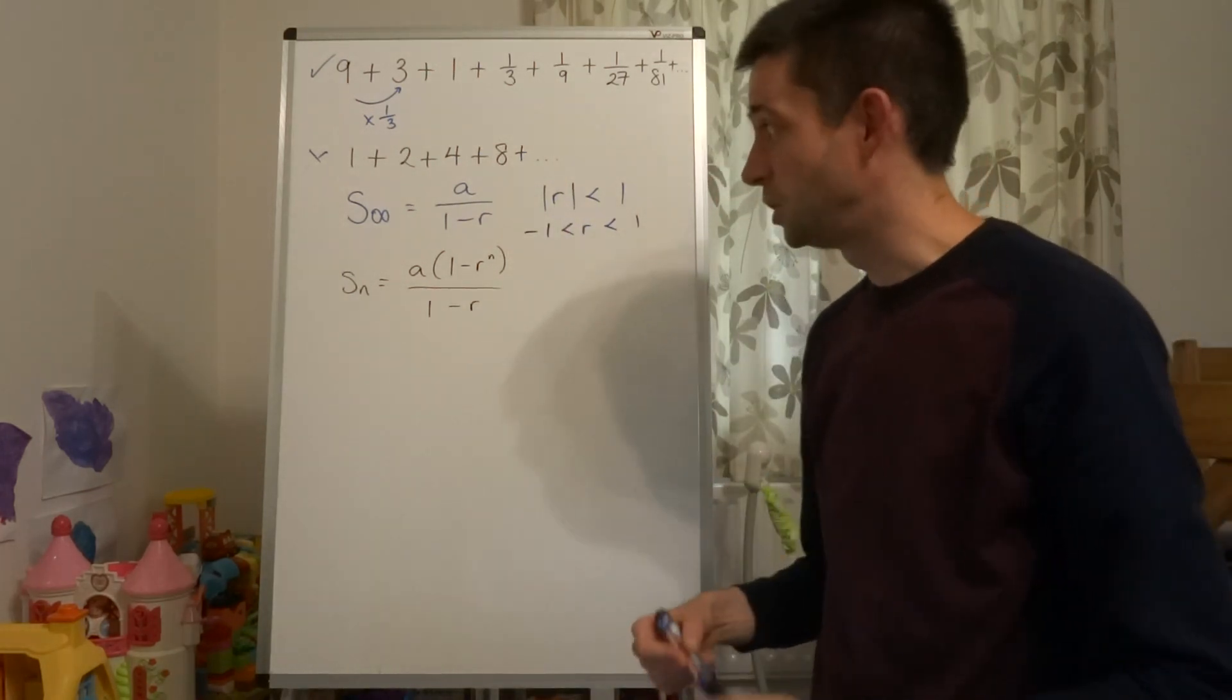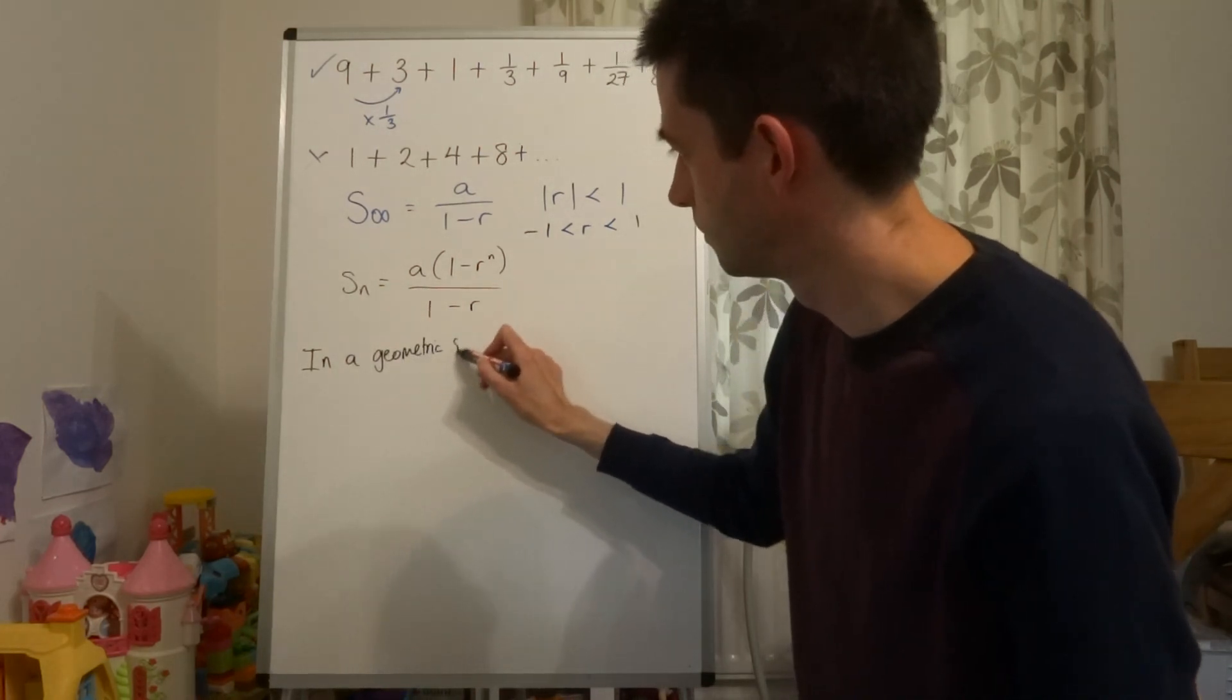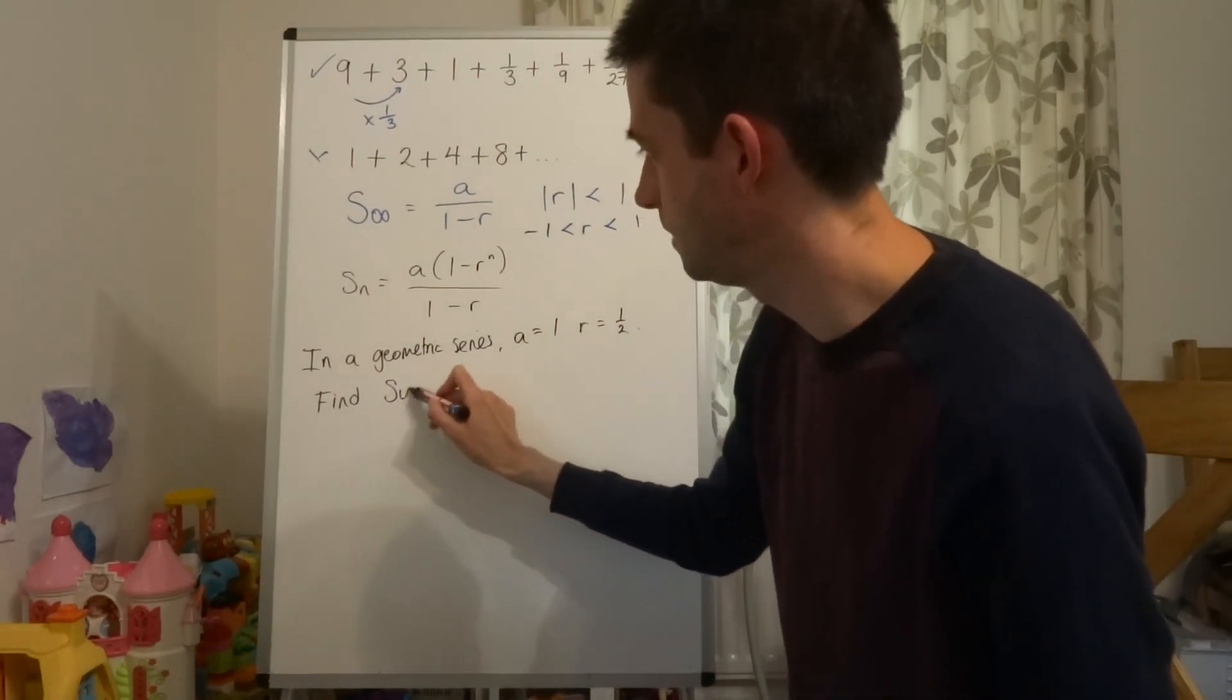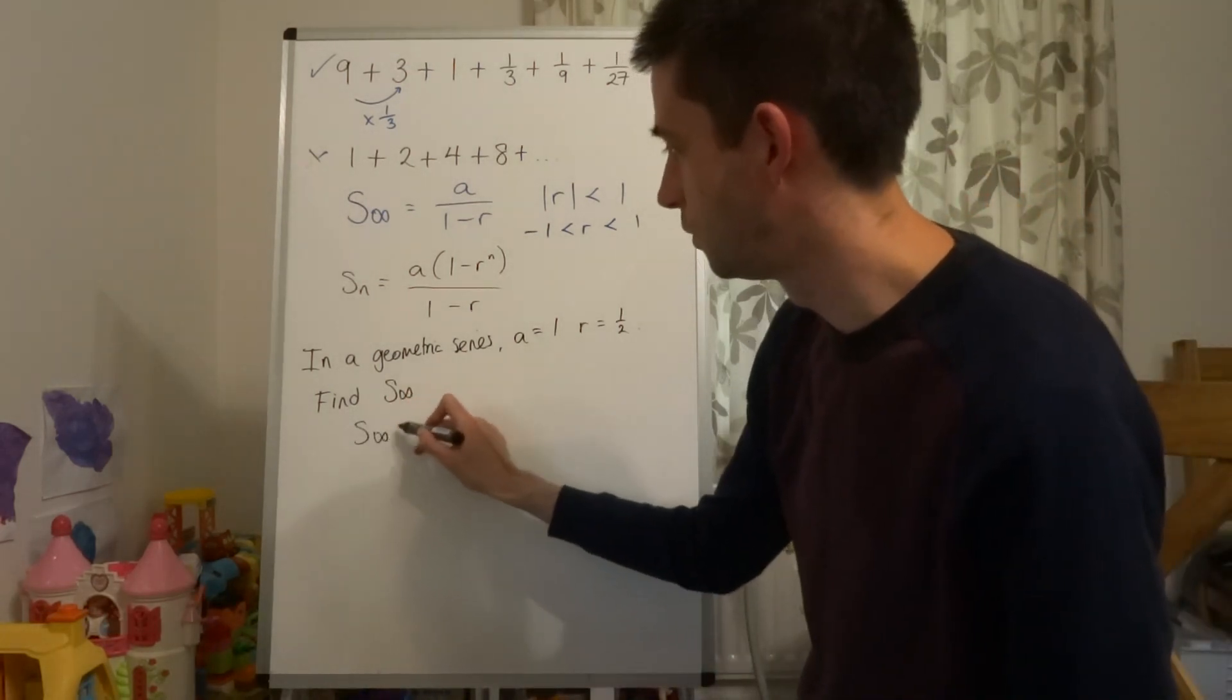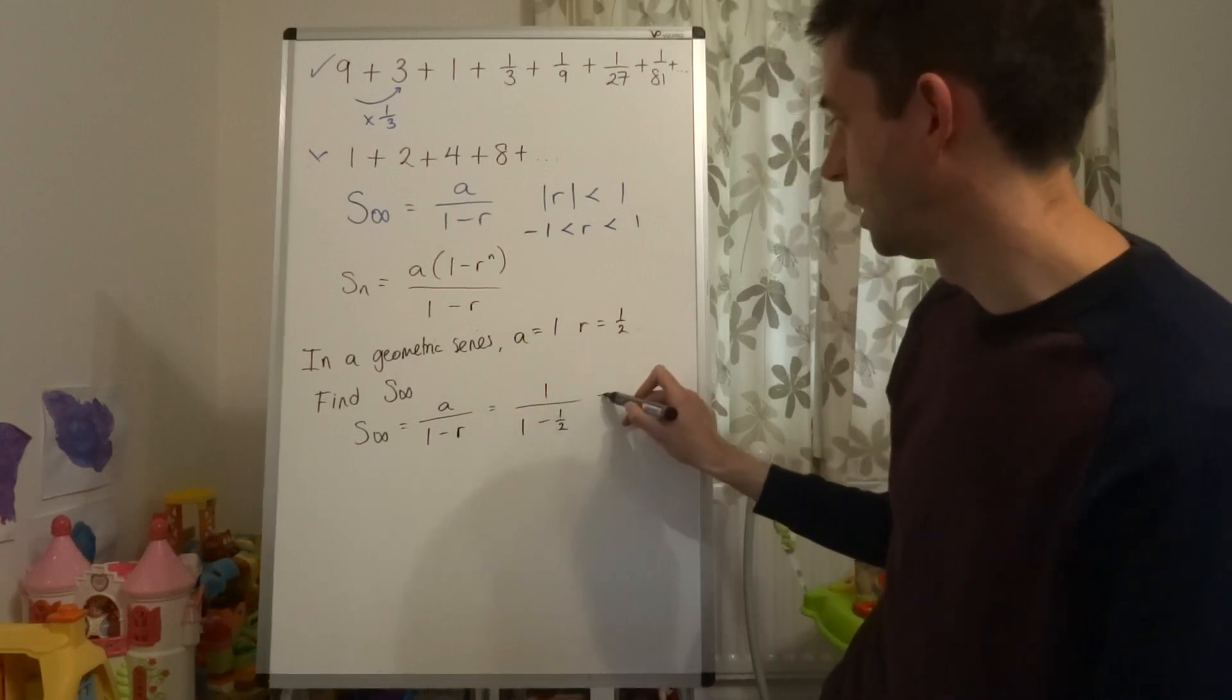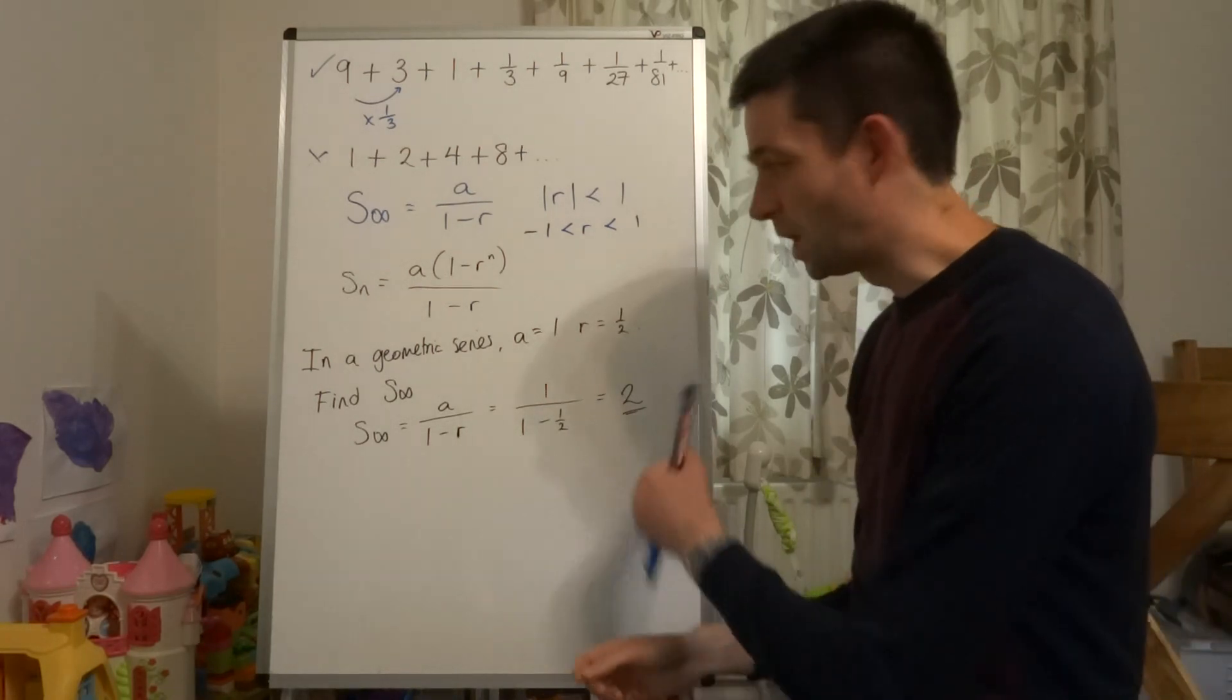More importantly is how to use it. So if, for example, we had a geometric series where a equaled 1 and r equaled 1 half, and we were asked to find the sum to infinity, all we would do is we would use the sum to infinity formula, which is a over 1 minus r, which in this case would be 1 over 1 minus 1 half, which would be 2. And what we can do is if we write a few terms of that sequence out, you can see really nicely where that 2 comes from.